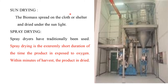For drying, either sun drying can be done where the biomass is spread on cloth or a shelter and dried under sunlight, or spray drying can be used. In spray drying, the duration of exposure to oxygen is extremely short — within minutes of harvest the product is dried.